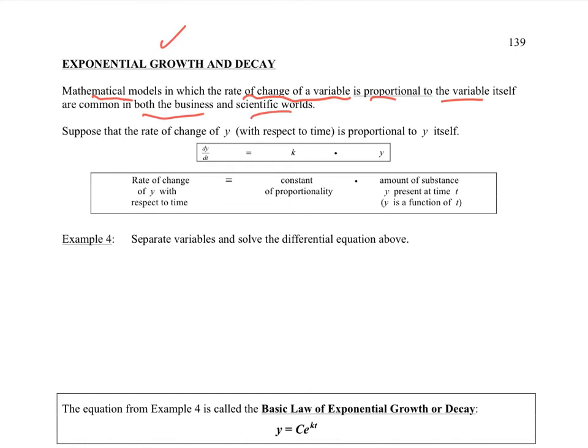This is very common in business and scientific worlds. So here's my rate of change proportional to the population itself, or whatever y is. And we use this a lot with growth and decay, populations, different things. So rate of change of y with respect to time has a constant port, which is equal to a constant proportionality times the amount y present at time t.